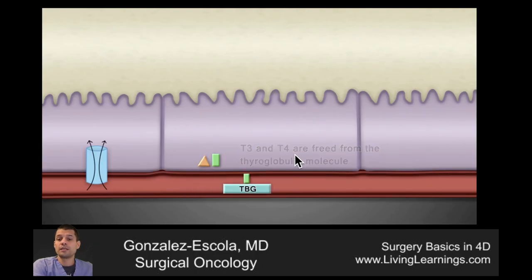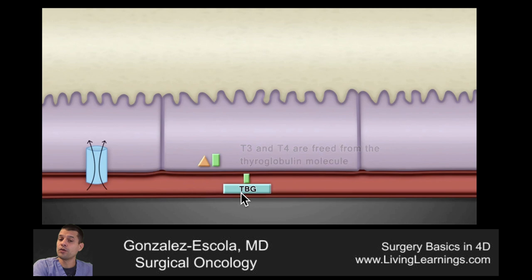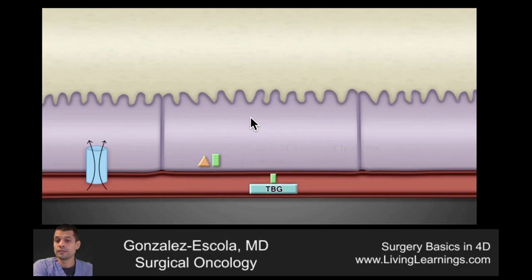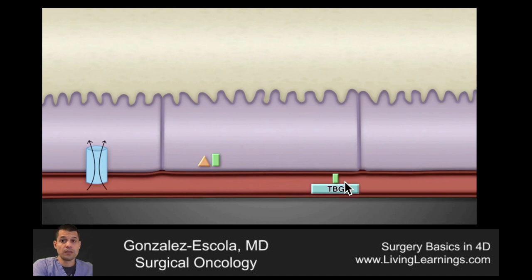T3 and T4 are lipophilic and therefore cannot travel well in blood. They need a thyroid binding globulin to travel within the circulatory system. There are many more T4s created than T3s, and T3s are about 10 times more potent or active than T4s.